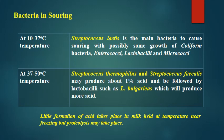Bacteria involved in souring: at 10–37°C, the major bacterium is Streptococcus lactis, with possible growth of coliform bacteria, Enterococci, lactobacilli, and micrococci. At higher temperatures of 37–50°C (thermophiles), the main organisms are Streptococcus thermophilus and Streptococcus faecalis, which may produce up to one percent acid, followed by Lactobacillus bulgaricus producing more acid. There is little acid formation when milk is held near freezing temperature, but proteolysis may take place slowly.